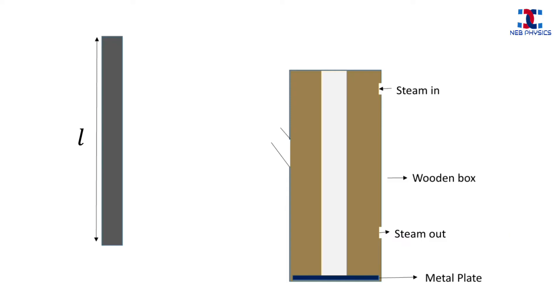The Pullinger's apparatus is a wooden frame with a cavity where a metal rod can be inserted. There is an inlet and an outlet for steam. There is also a small cavity for holding the thermometer. There is a metal plate at the bottom of the cavity.